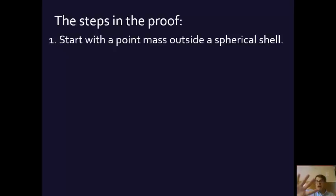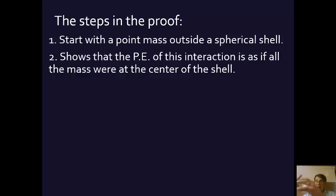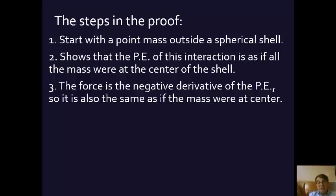So they start with assuming that we have a sphere and they look at one shell, just one shell of that sphere in relation to a point that's outside that one little shell. And basically they start by showing that the potential energy of the interaction between a shell of a sphere and a point outside of it is the same as if all the mass of this shell were concentrated in the middle of the sphere.